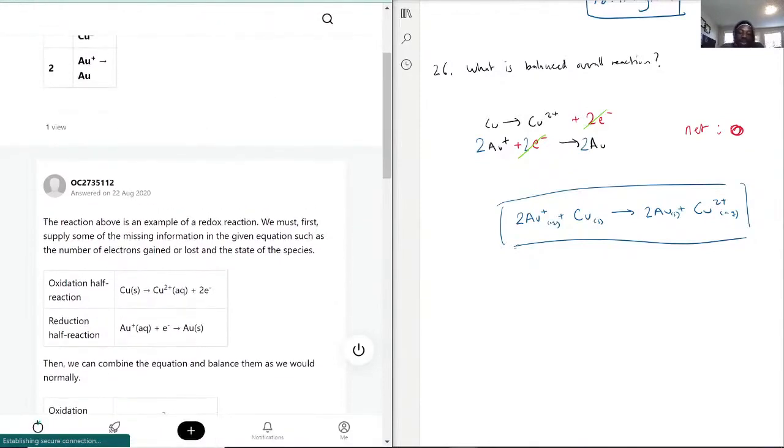The way you remember is OIL RIG: oxidation is loss, reduction is gain of electrons. So copper was oxidized, gold was reduced.